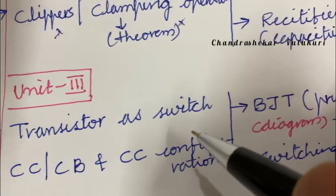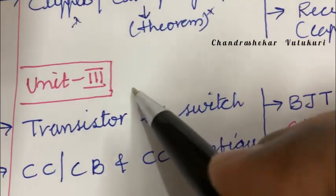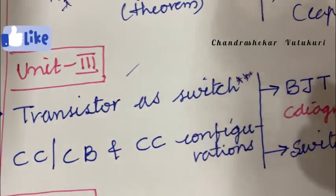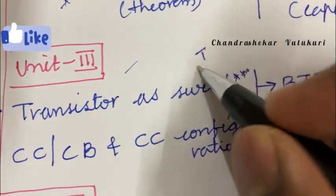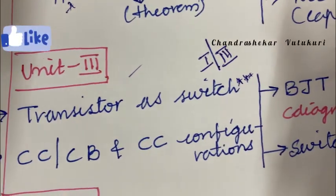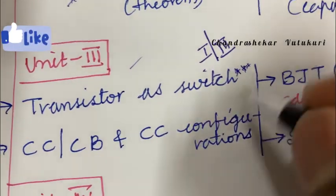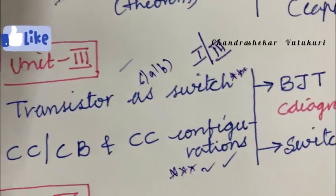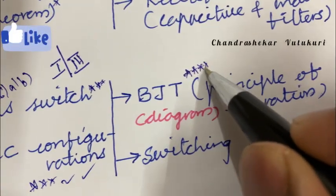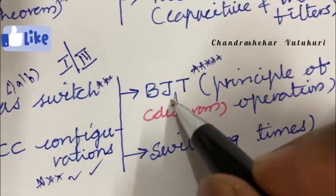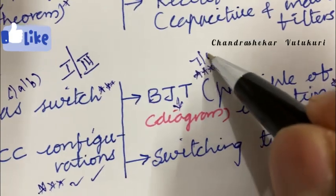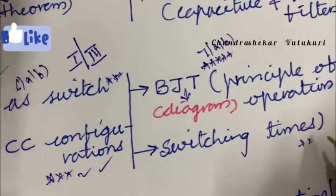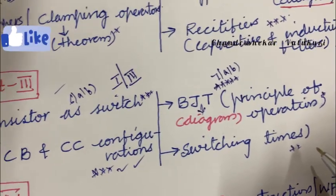Unit 3 is all about the transistor as a switch. An average student should definitely work out this unit. There is no need to follow strict continuity — work out Unit 1 first, then Unit 3, if you are looking to just pass. CB, CE, and CC configurations — one of these three may appear as a short or long question in 6A and 6B. BJT is set to be the topmost gunshot question for all branches of engineering, covering its diagram, working principle, and operation, appearing in 7A and 7B. BJT applications and switching times may also appear as short questions.